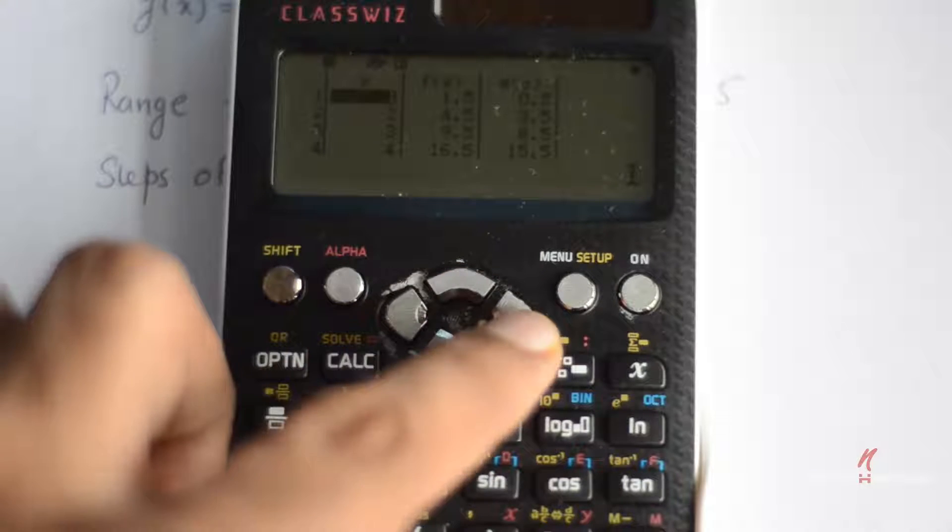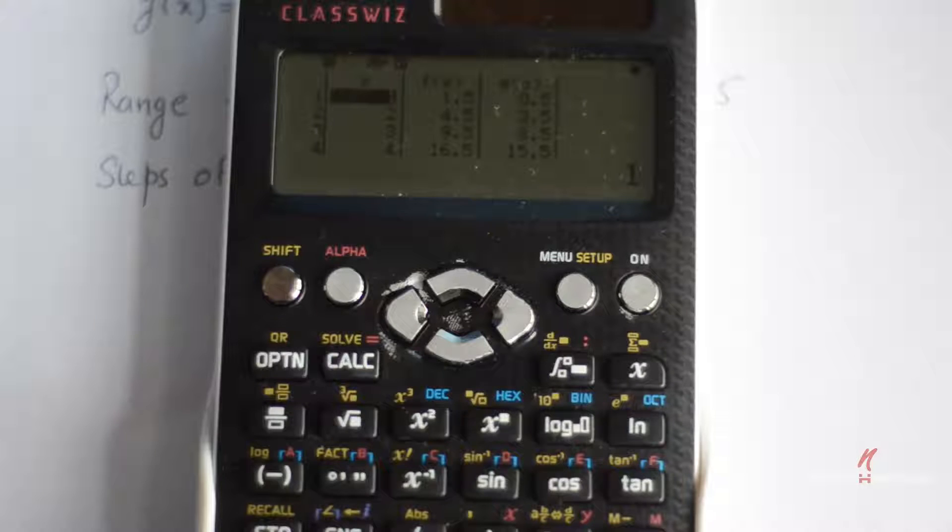So you can see if you put the value of x equal to 1 in f(x) it gives you 1.5, in g(x) it gives you 0.5.